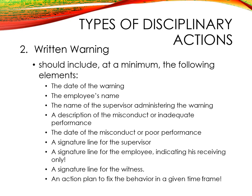The second element is a written warning. It should include, at a minimum: the date of warning, the employee's name, the name of the supervisor administering the warning, a detailed description of the misconduct or inadequate performance, the date of misconduct or poor performance, a signature line for the supervisor, a signature line for the employee indicating they have received it, a signature line for a witness, and an action plan to fix the behavior within a given time frame.